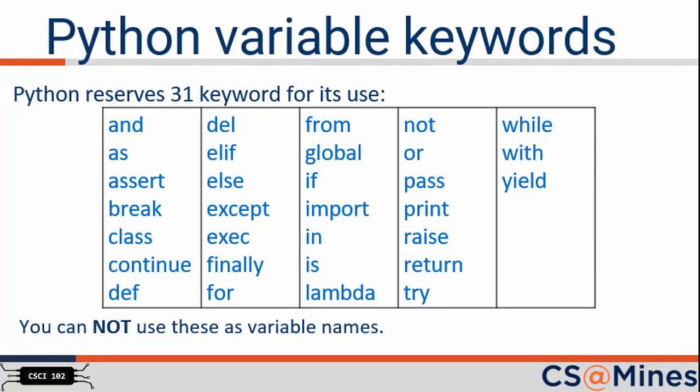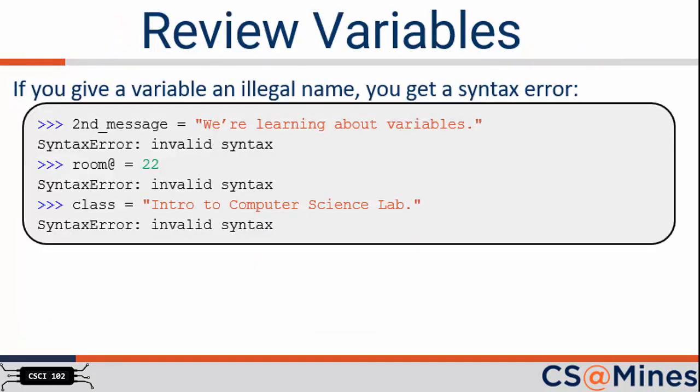Speaking of variable declaration, we previously talked about how you can't use keywords for variable names. Here is a list of 31 keywords in Python that you cannot use. Thus, even if you are writing a program to keep track of all the classes you are taking at Mines, you cannot use the variable named class. And if you do try and use an illegal variable name, the Python interpreter will give you a syntax error, as shown on this slide.